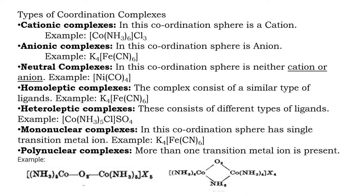We can further think about other types of complexes. Examples for cationic, anionic, and neutral complexes have been given. Next are homoleptic complexes — in these, the coordination sphere contains only one type of ligand. For example, K4[Fe(CN)6]: here all ligands in the coordination sphere are the same (CN⁻), so it is a homoleptic complex. Heteroleptic complexes, on the other hand, have two types of ligands in the coordination sphere — for example, NH3 and Cl⁻ together — making it a heteroleptic complex.